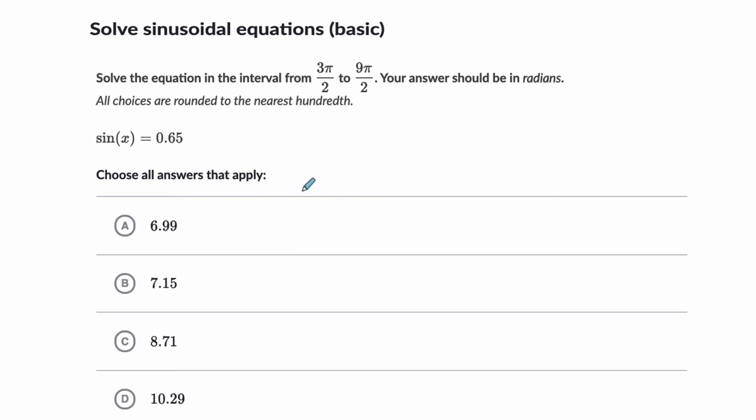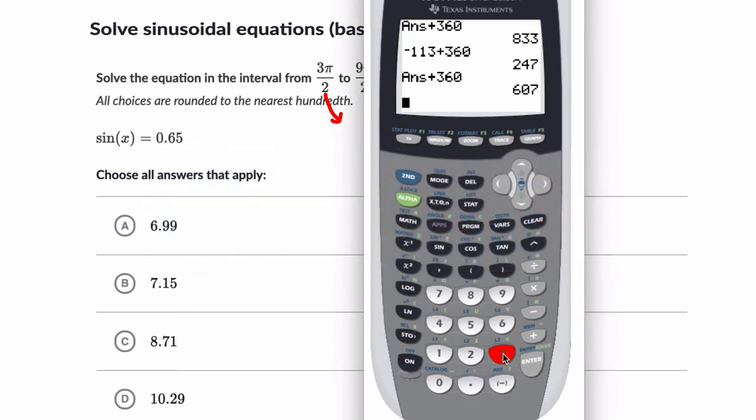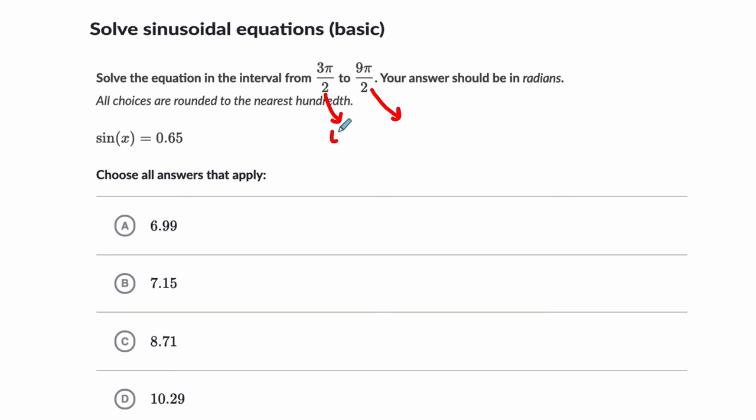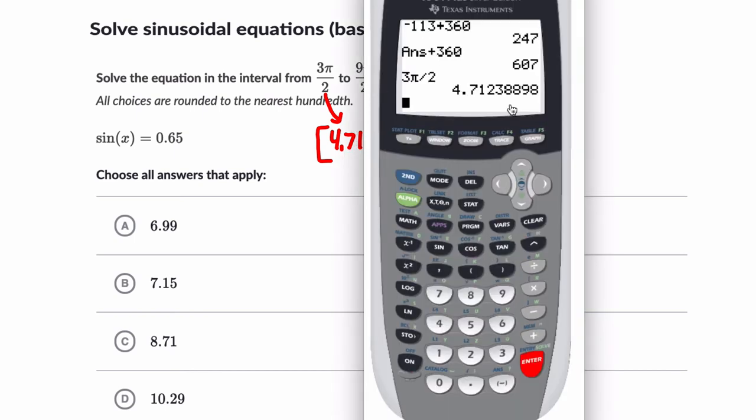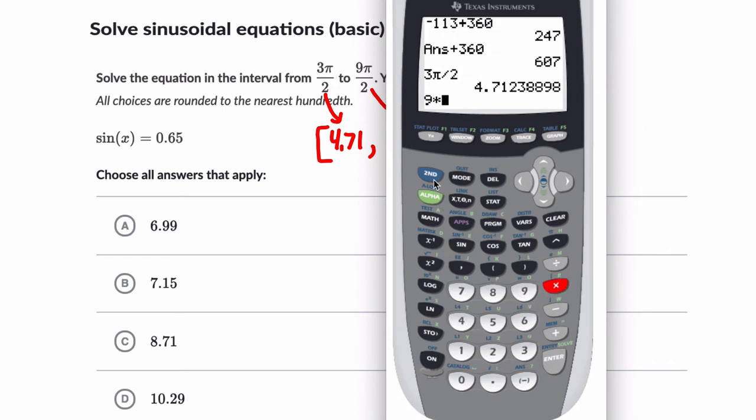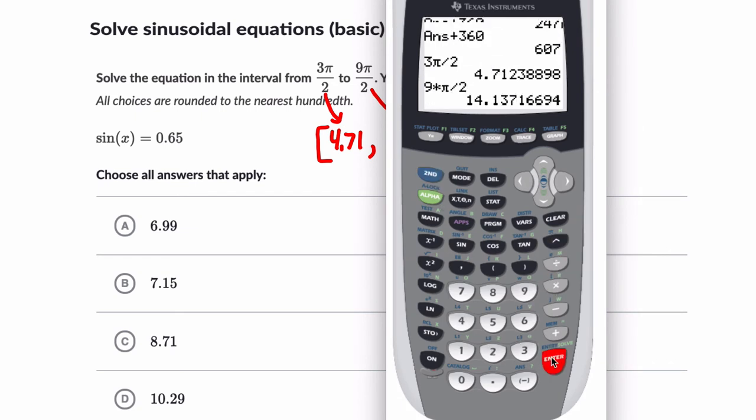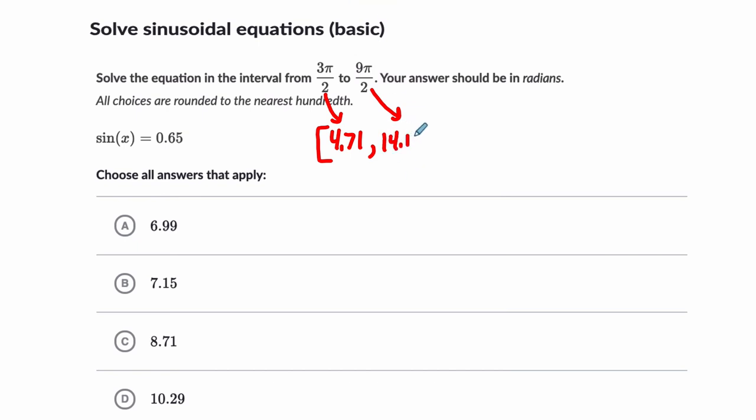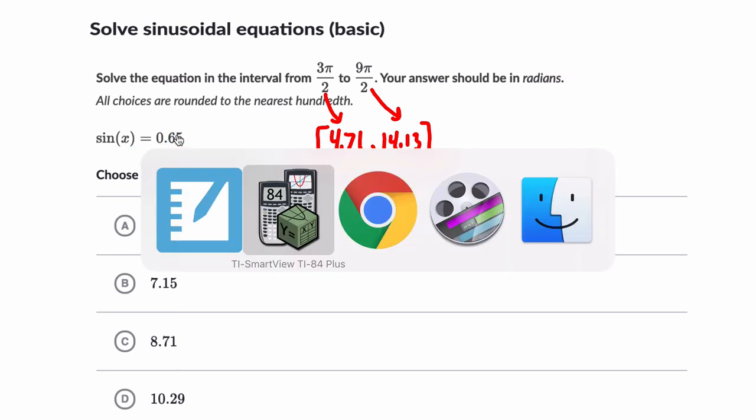The other one, we've got negative 113, then add 360 and get 247. That works. Plus 360 again, we get 607, which is this angle here. If we added 360 again it would be about 967, too big, above our range. So these are our three angles. We'll finish with a quick one. In this one the interval is in radians. Personally what I like to do is first calculate these things to see what they are in decimal form. So 3π divided by 2 is about 4.71, and 9π over 2 is about 14.13. All our answers need to be in this domain.